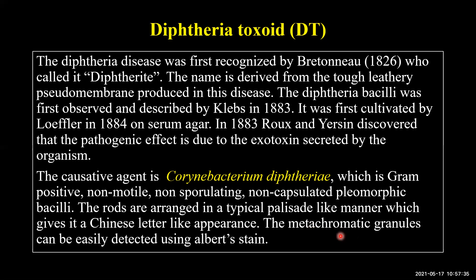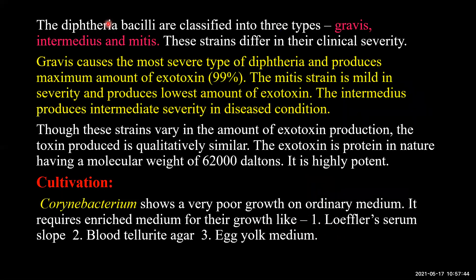The palisade arrangement gives the bacteria a Chinese-letter-like appearance. The organism shows the presence of metachromatic granules which can be easily detected by Albert's stain. Observing the metachromatic granule is one of the methods of identifying the bacteria.